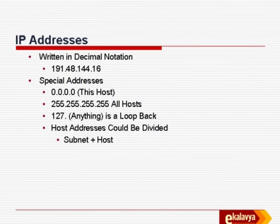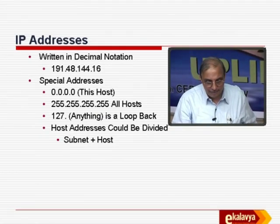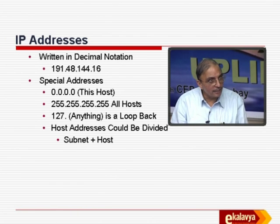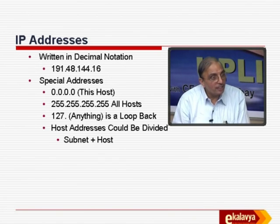A typical address will be 191.48.144.16 or 250.something.something.something. How will you know whether the address is Class A, Class B, Class C, or Class D? It's not simply because it begins with one, since decimal one is not necessarily the first bit one. You have to translate 191 into binary and consider the first few bits to determine what class of address it is.